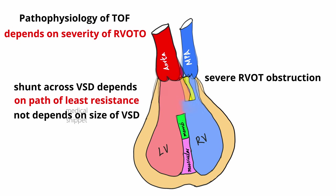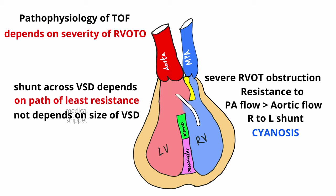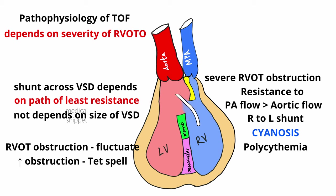As the RVOT obstruction increases, the resistance to blood flow across the RVOT also increases, so blood from the RV preferentially enters the aorta via the VSD, causing a right-to-left shunt and leading to cyanosis. As the severity of RVOT obstruction increases, there is deepening of cyanosis, and due to chronic cyanosis, TOF patients develop polycythemia. Even in patients with mild cyanosis, they can develop profound cyanosis and tet spells when there is a transient increase in the severity of RVOT obstruction.